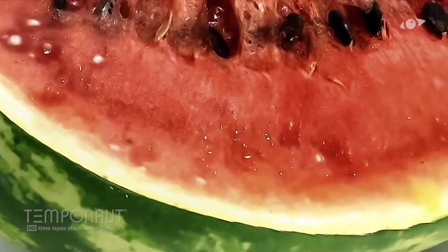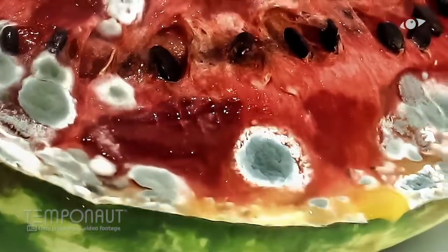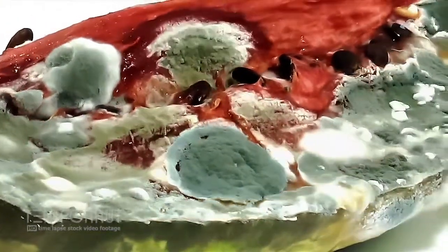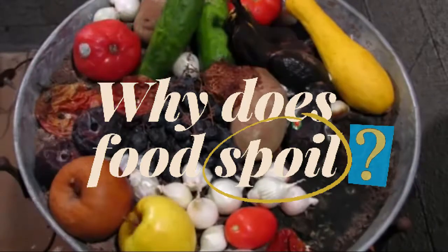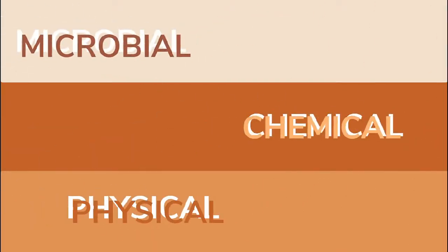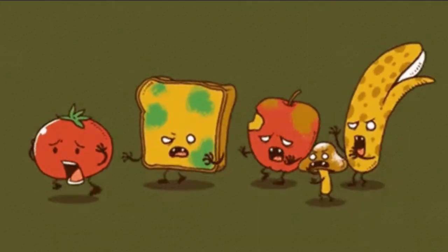Food spoilage and deterioration is no accident — it is a naturally occurring process. To understand how to maintain the quality of food and prevent spoilage, we need to know what causes it. Factors that can cause food to spoil include microbial, chemical, and physical reactions, but for this video we're going to focus only on the chemical factors.